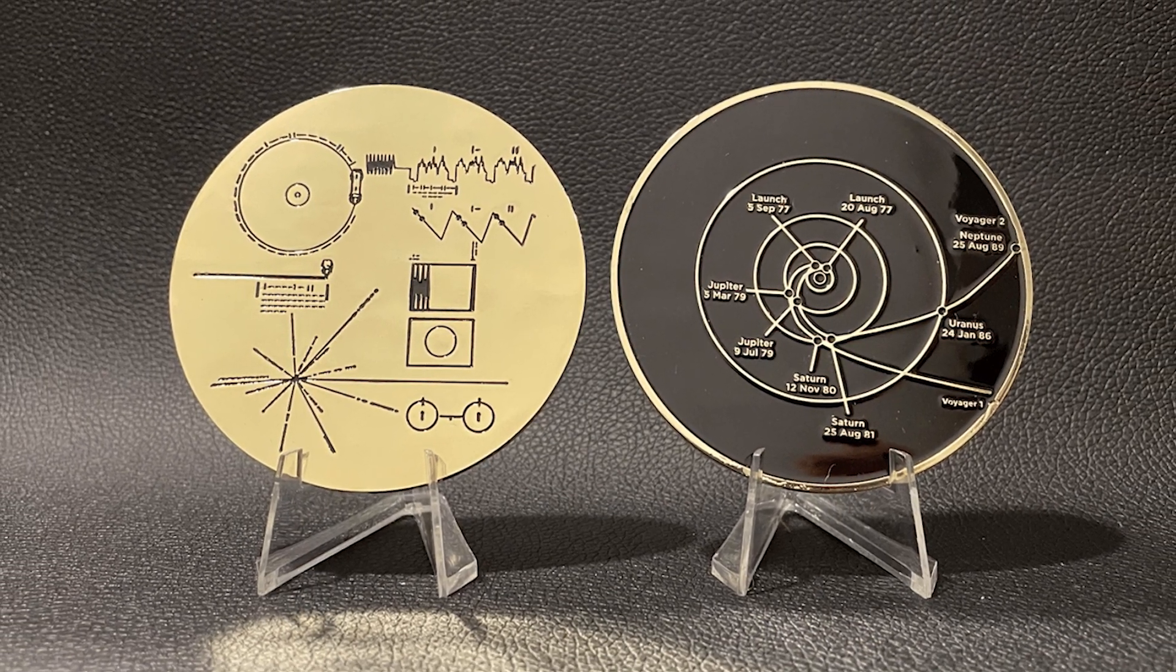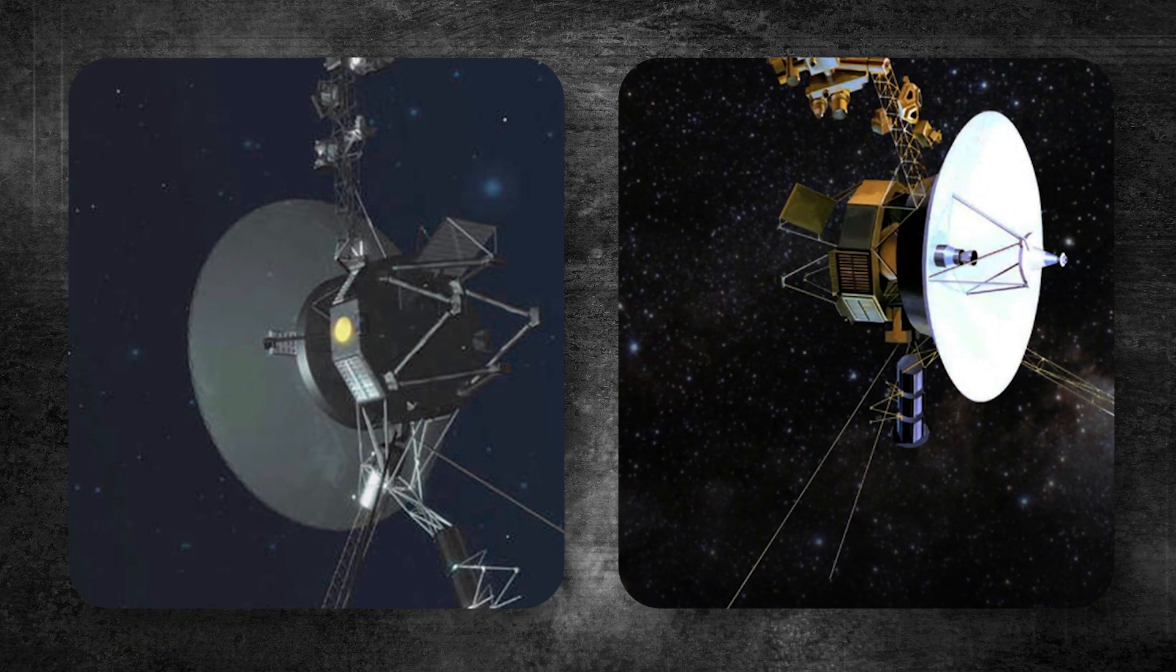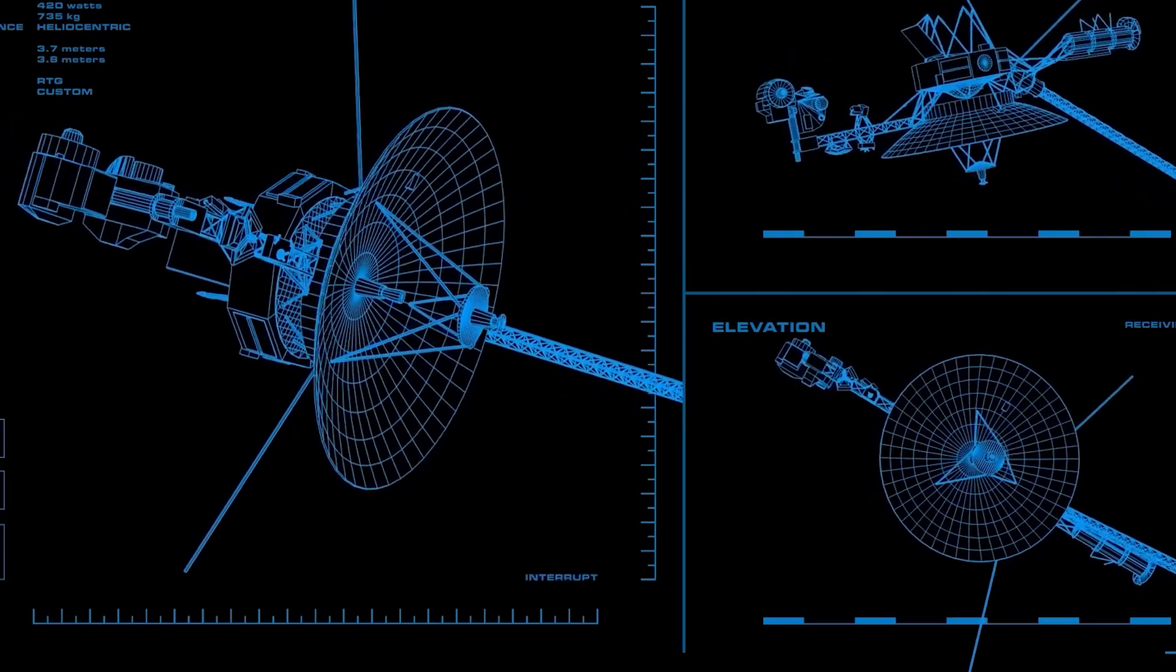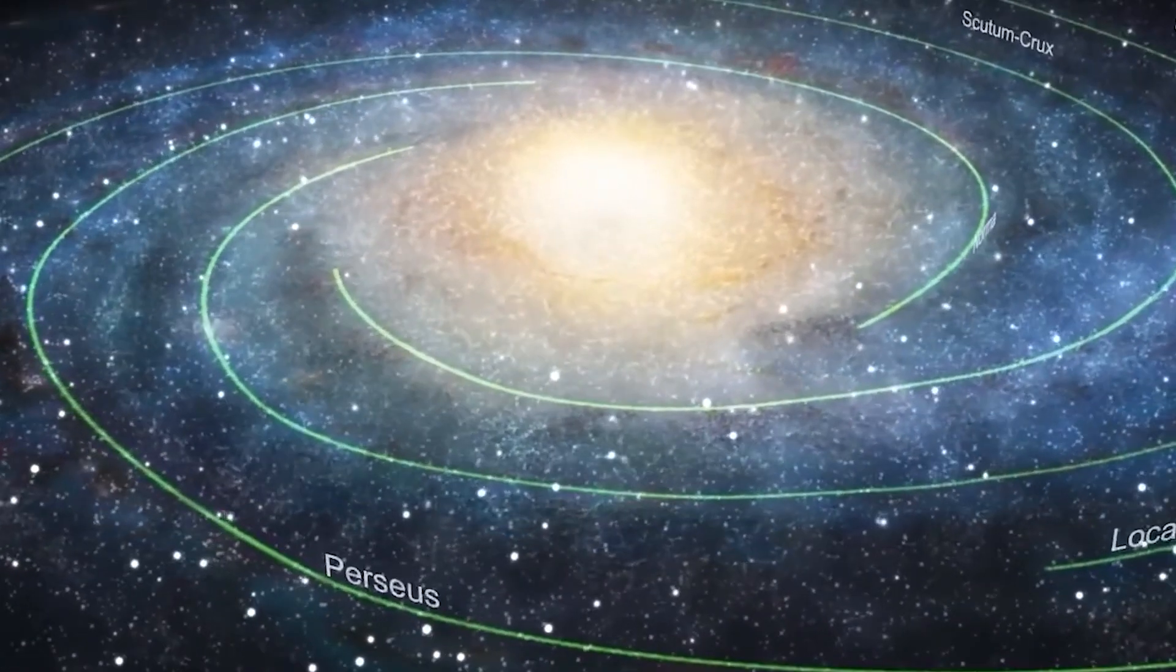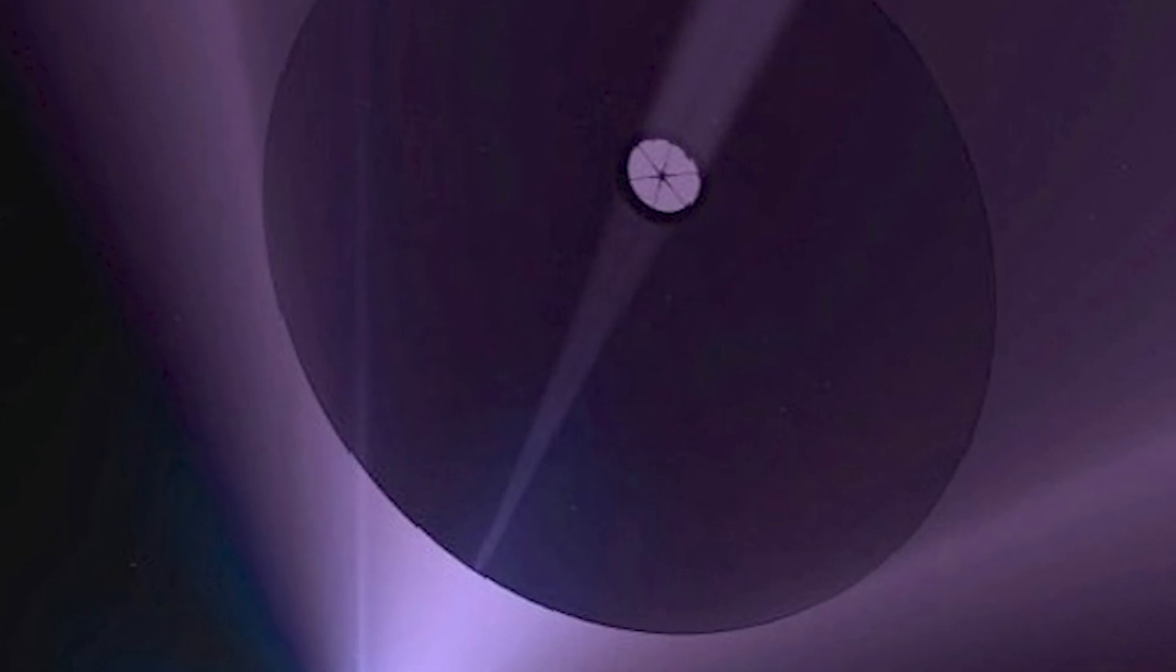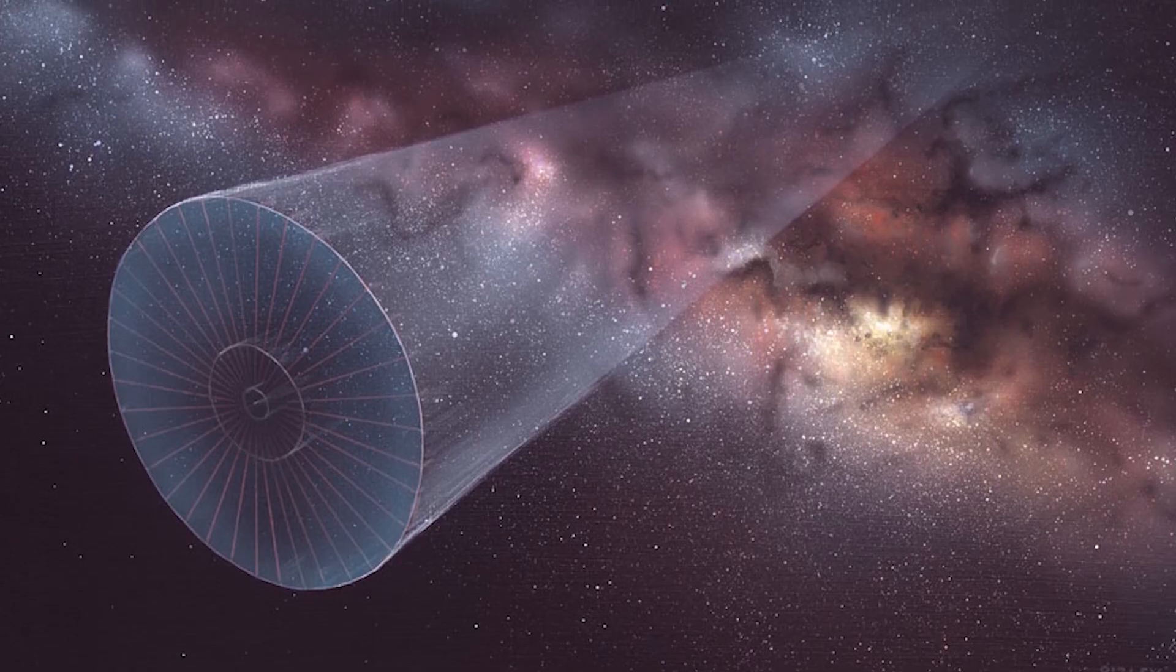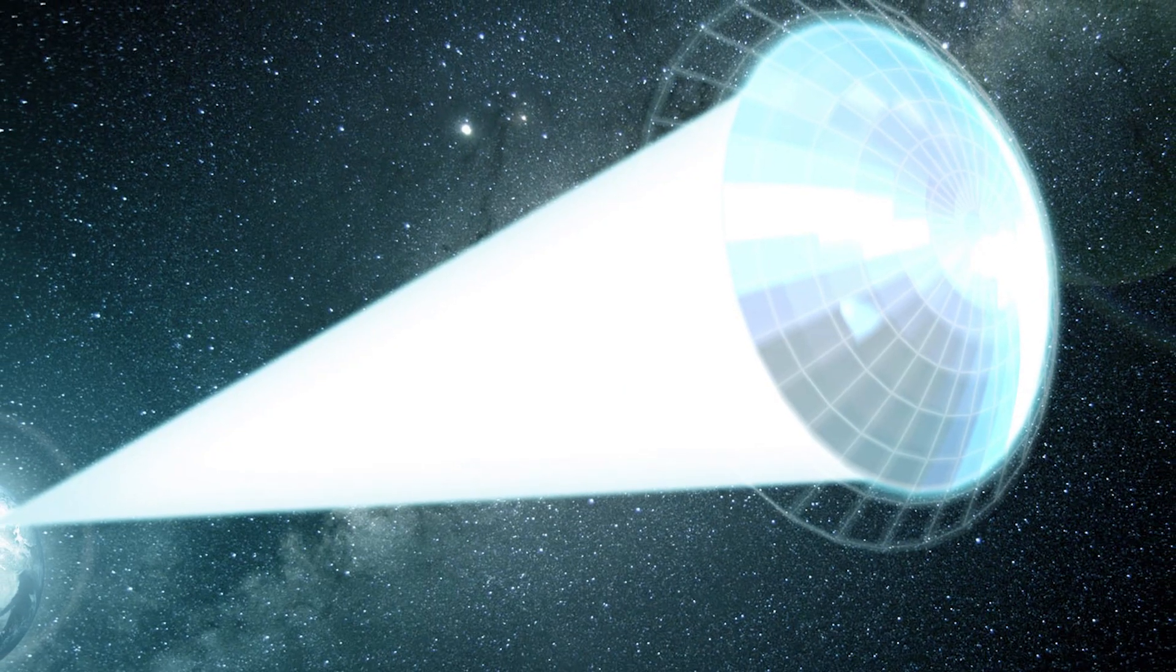Today, the golden records still remind us of our shared journey as humans. They continue to inspire new ideas and projects that explore the possibility of finding life beyond Earth. As Voyager 1 and Voyager 2 keep traveling, they pave the way for future missions. One such project is NASA's Interstellar Probe Mission, which aims to go beyond our solar system. The Breakthrough Starshot Initiative is a bold new project that aims to send tiny spacecraft to the closest stars using powerful lasers, reaching other star systems within a human lifetime.